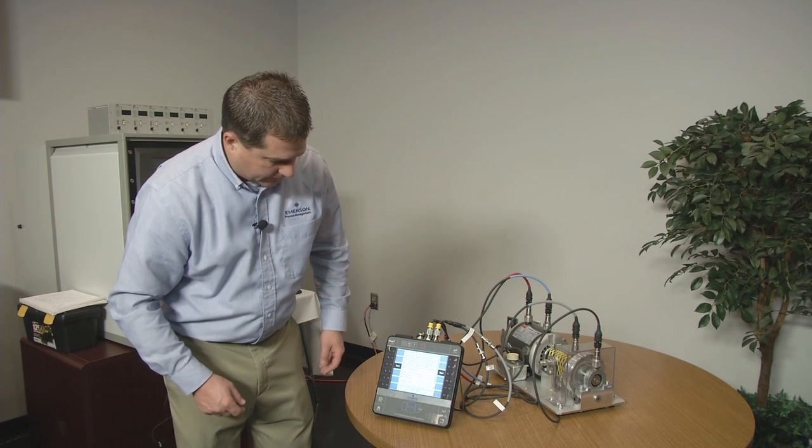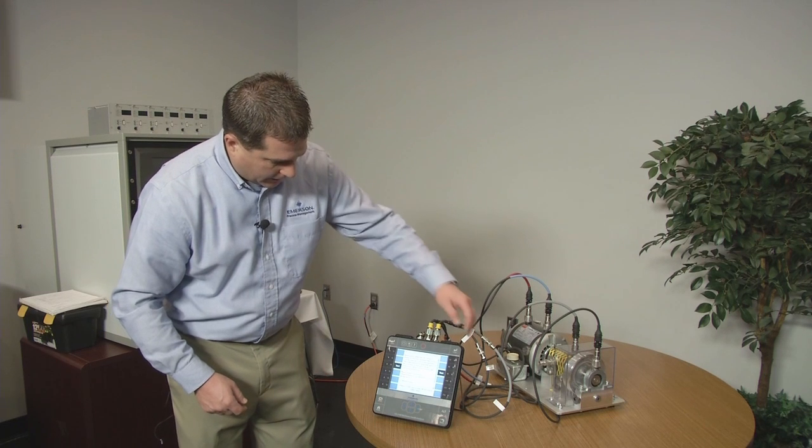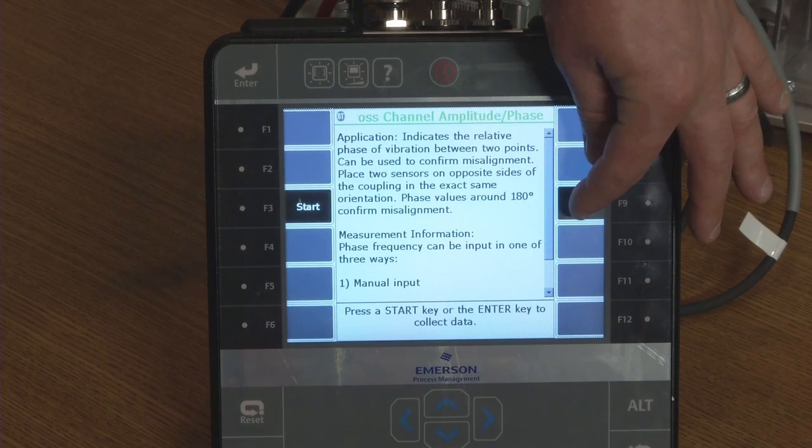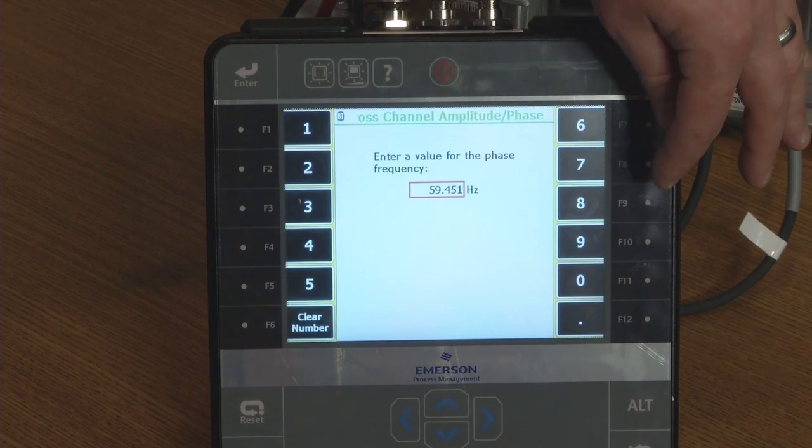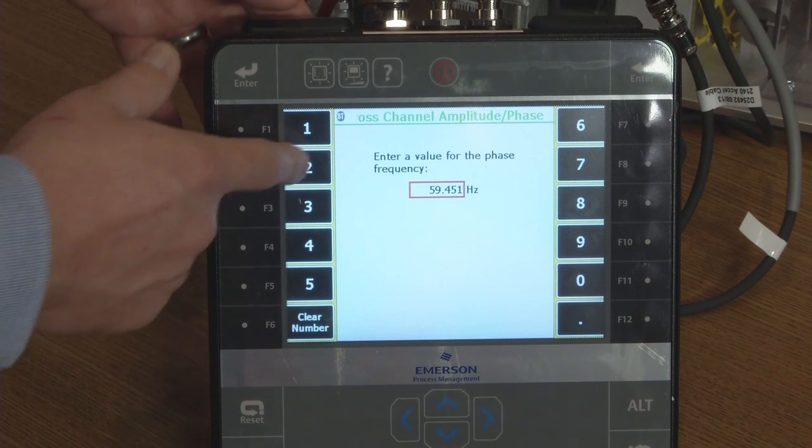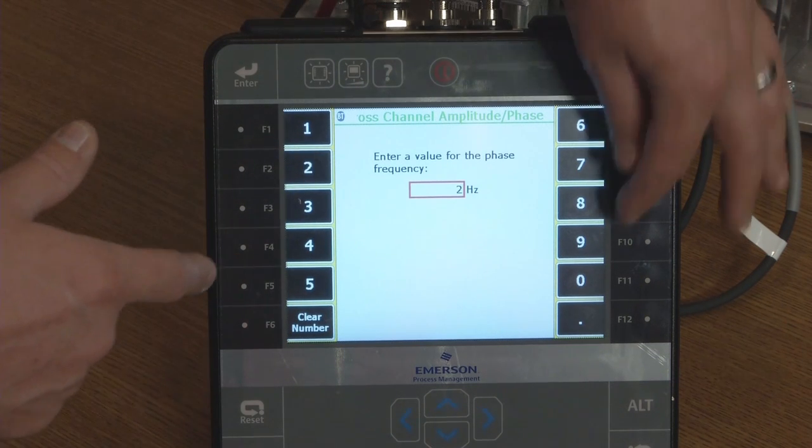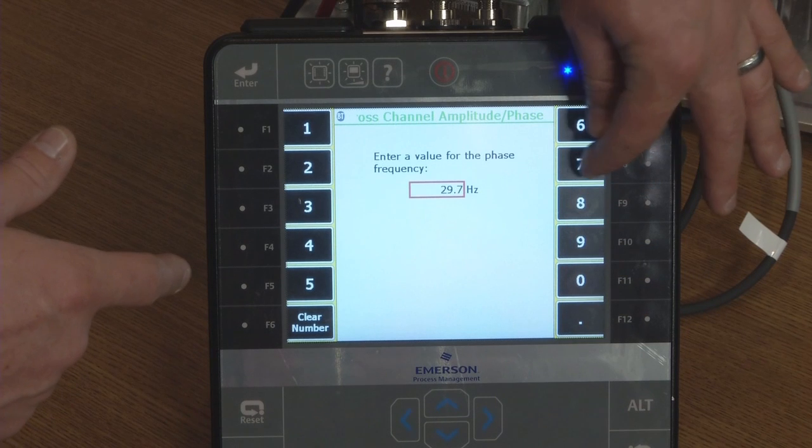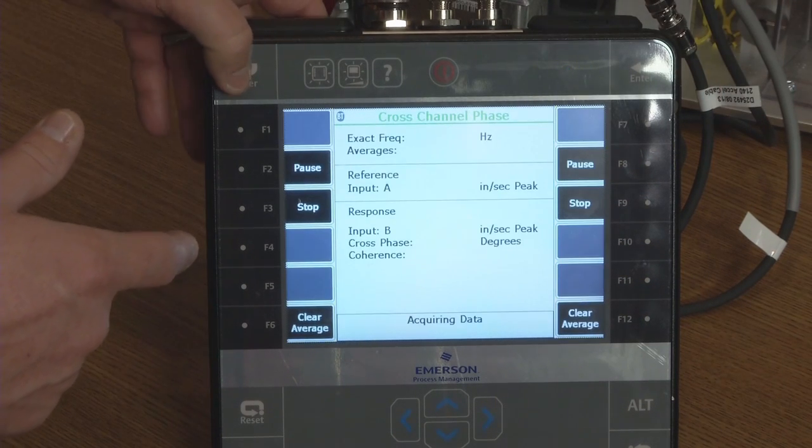So I can go into this and I can press start. And it's asking for the frequency. I'm going to use just the one times turning speed frequency here. So I'm going to type in 29.7 and press Enter.